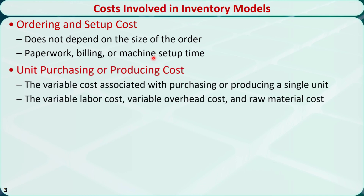The unit purchasing or producing cost is simply the variable cost associated with purchasing or producing a single unit. It may include the variable labor cost, variable overhead cost, and raw material cost for producing one unit of product.